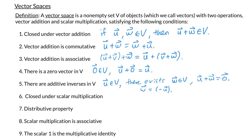Property 6 says that my set V is closed under scalar multiplication. Scalars are just real numbers. So closed under scalar multiplication means that if I have any scalar c and any object u in my set V, then c times u is also an object in my set V.